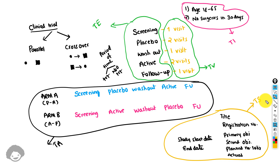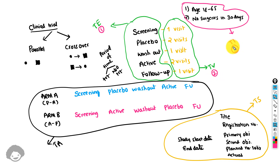The dataset in which such trial-specific information is captured is the trial summary dataset, which is the TS dataset. So we have five trial design domains: trial elements (TE), trial visits (TV), trial inclusion exclusion criteria (TI), trial arms (TA), and trial summary (TS).